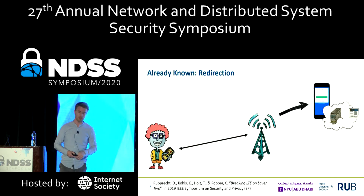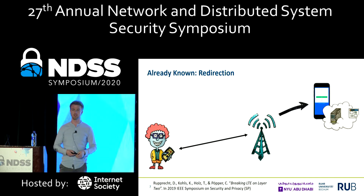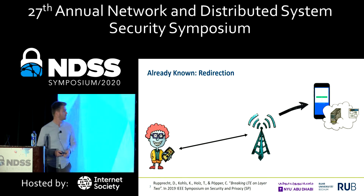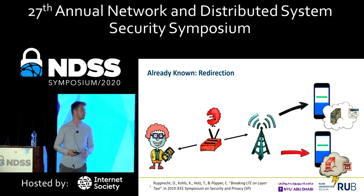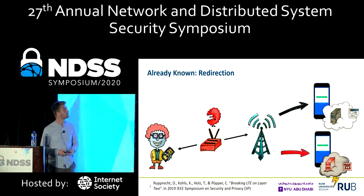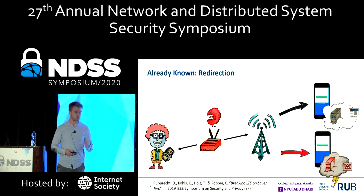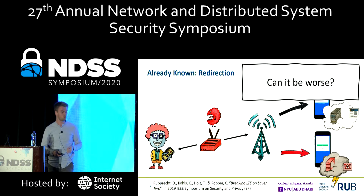We have already shown that this malleable encryption in LTE leads to wide consequences, presented last year at Oakland. An attacker in a man-in-the-middle position between your phone and the network can redirect you to a malicious web page and steal credentials. So the question is: can it be worse? And yes, it can be worse with IMPACT.